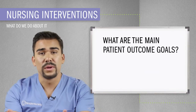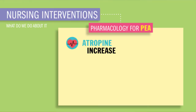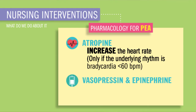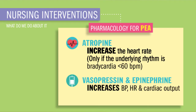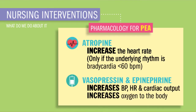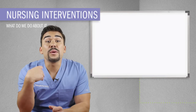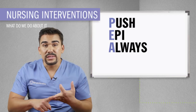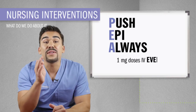So what are we going to do about it? Here are some nursing interventions and treatments. Like all other deadly rhythms, we're going to call a code, start CPR, intubate the patient, and use our ACLS measures. We're going to use pharmacology like atropine to increase the heart rate, but only if the underlying rhythm is bradycardic — less than 60 beats per minute. We'll also use vasopressin and epinephrine to increase blood pressure by vasoconstricting, basically squeezing the blood vessels like toothpaste. This increases blood pressure and heart rate to increase cardiac output and oxygen to the vital organs like the heart and brain. The simplest way to remember the main medication for PEA is the acronym: push epi always — in one milligram doses IV every three to five minutes during the arrest.